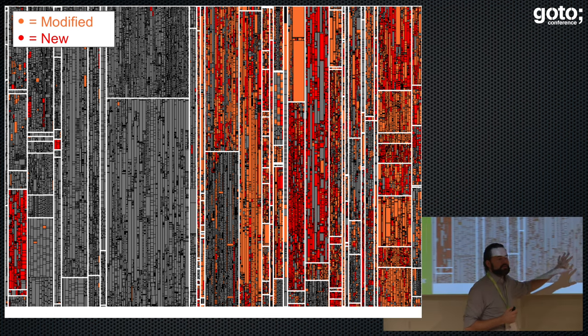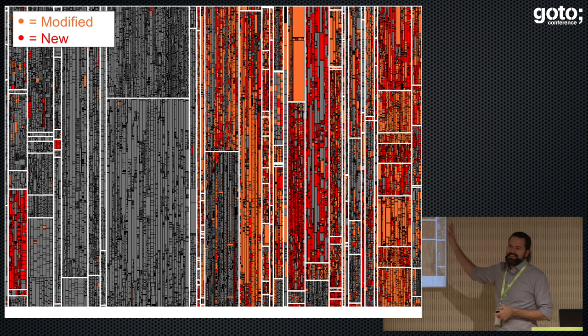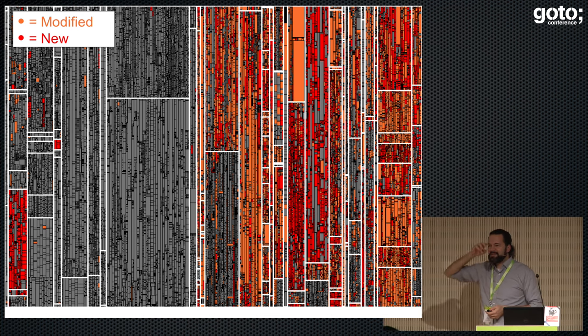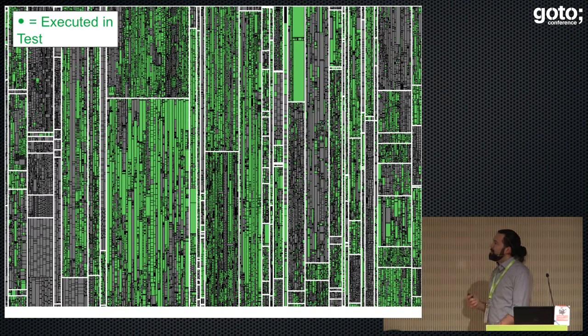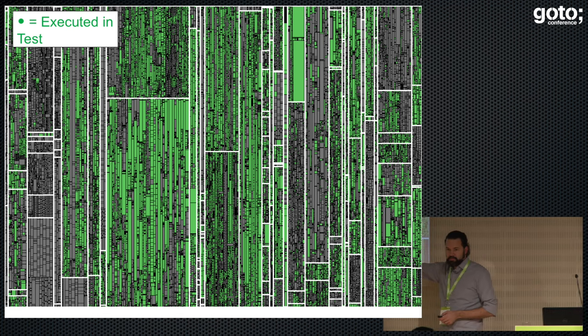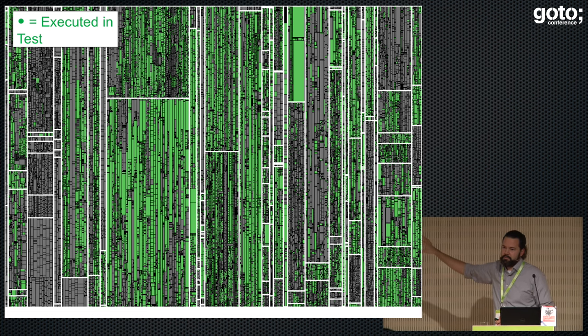This tree map displays what changed since the last release in a pre-agile project — about 20 developers developed for six months. Everything grey is unchanged, orange is code that existed before but was adapted, and red is new. You can see a lot of heavily modified or new code on the right-hand side. Using the same tree map for test coverage: grey is untested and green was executed during test. This data comes from a test factory in India where roughly 10 testers spent several weeks testing thousands of manual test cases.